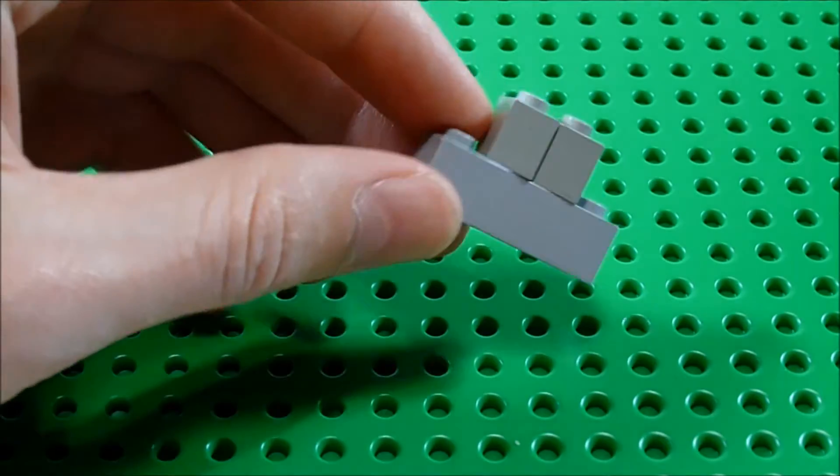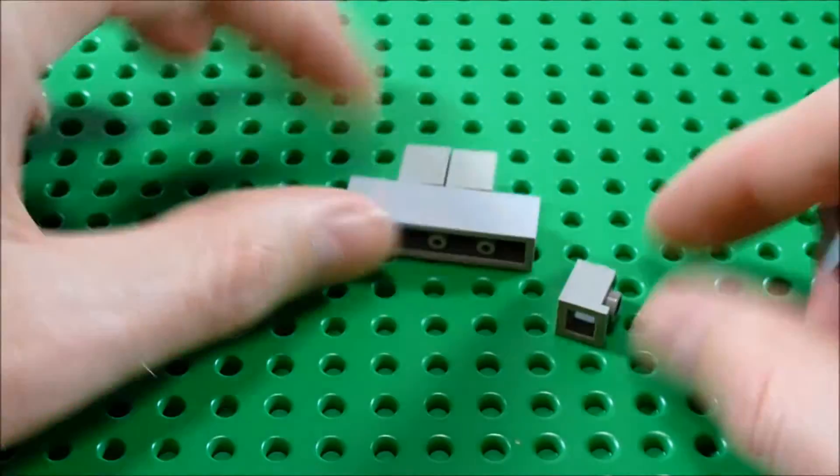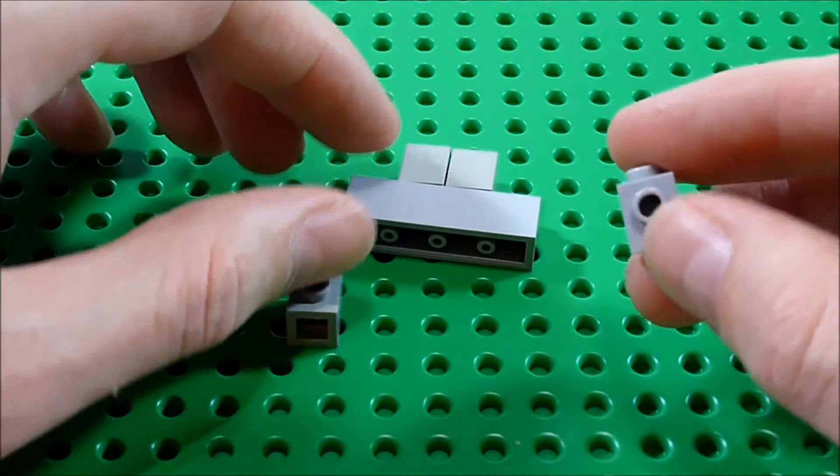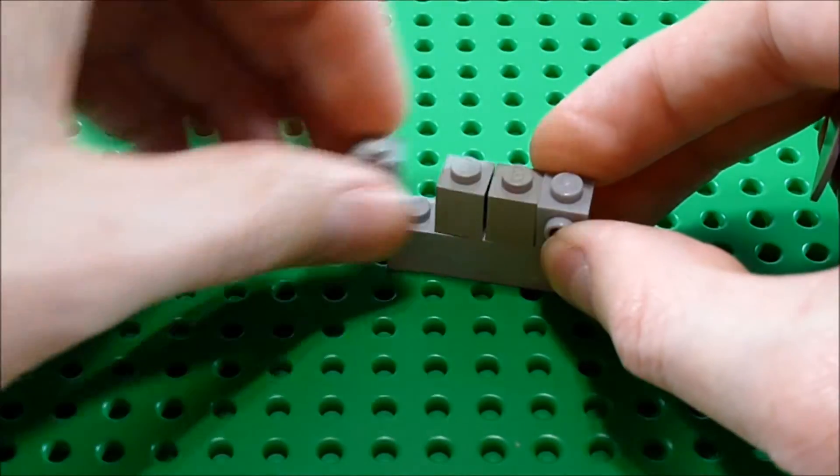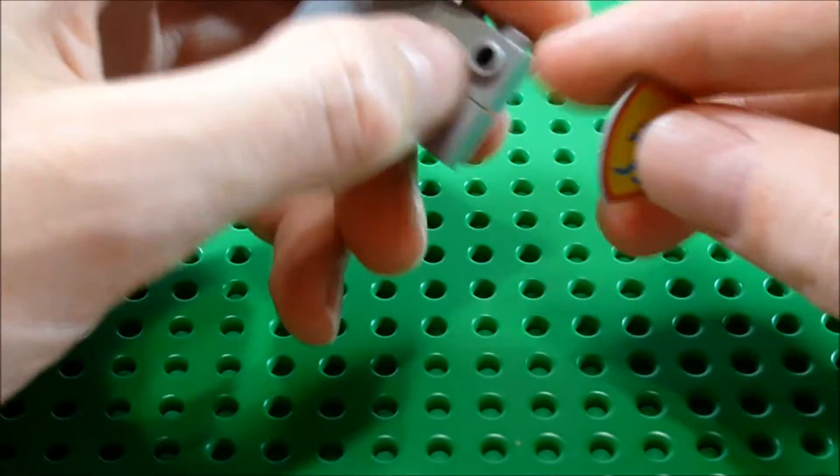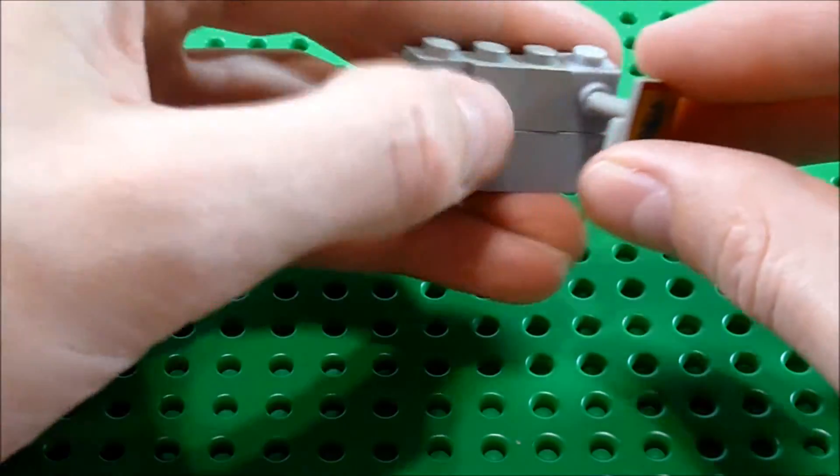The traditional way to stick a shield on a wall is to use either one of these headlamp pieces or one of the snot bricks. Stick it inside the wall like this and then use the back end of the shield to insert it into the hole there.